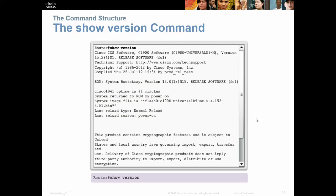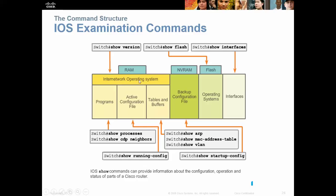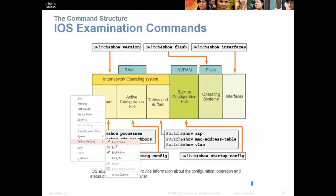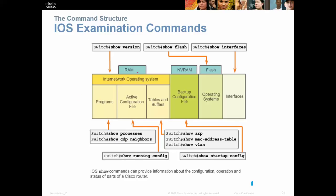Looking at the memory components: you have RAM, which holds the running IOS, programs, configuration file, tables, and buffers. NVRAM stores your backup configuration file. Flash is your non-volatile memory where the operating system is stored. And then you have your interfaces.